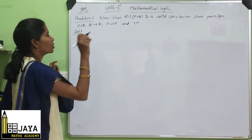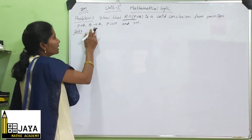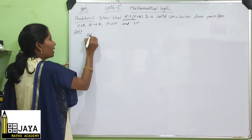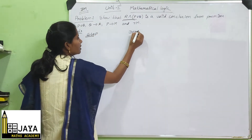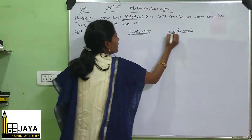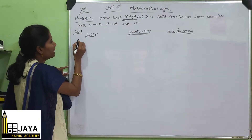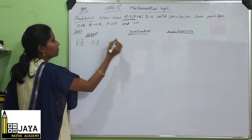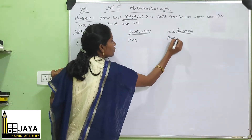We have to show this is a valid conclusion by using the given premises. In the first step we use the step and derivation part — derivation rule P formula. Any premise you can take; I am considering the first one, P∨Q. So it is a premise, so it is rule P.